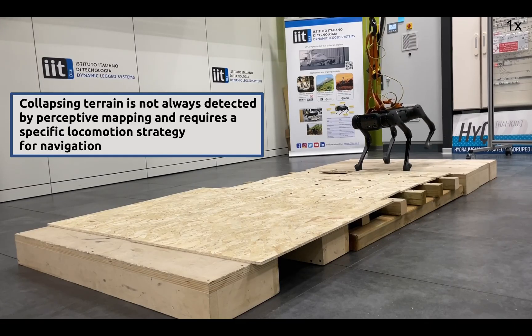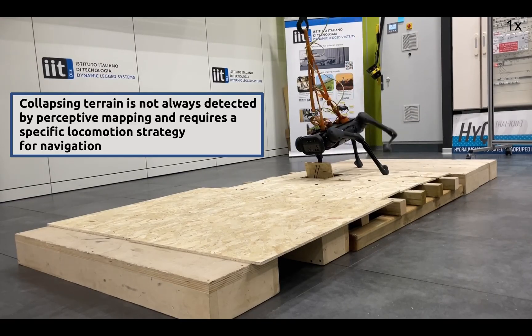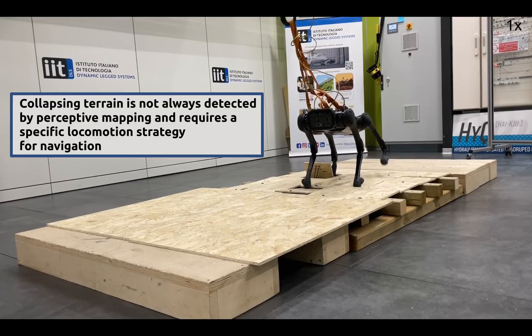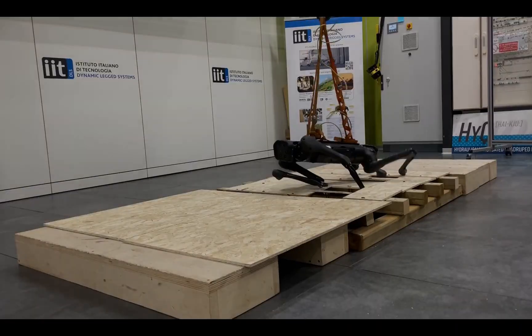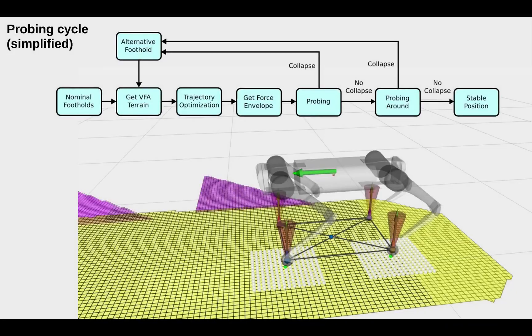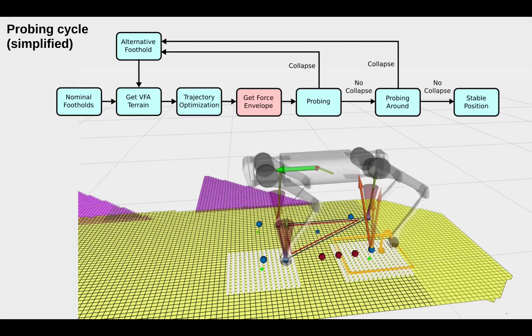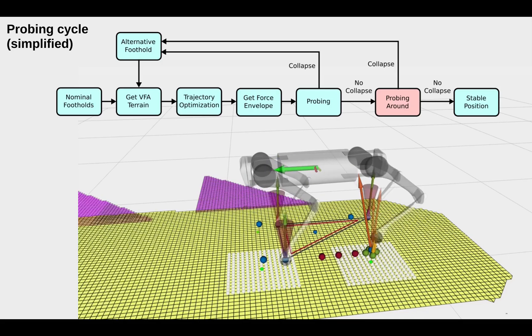Collapsing terrain is not always detected through perceptive mapping and requires a specific locomotion strategy for safe navigation. The probing cycle follows a defined state machine after the nominal footholds and the visual foothold adaptation terrain are obtained.